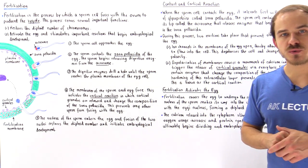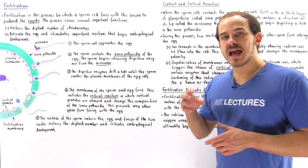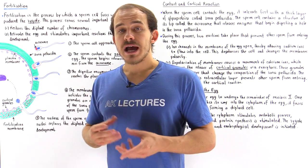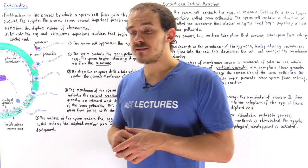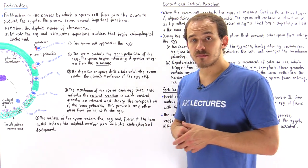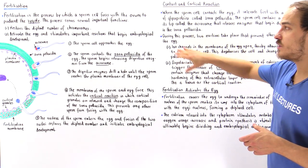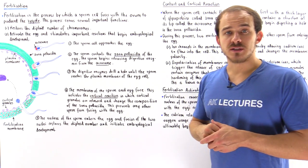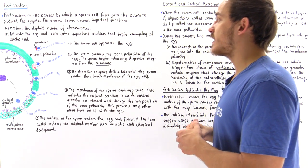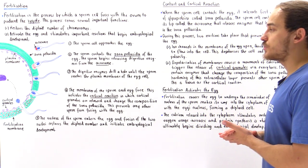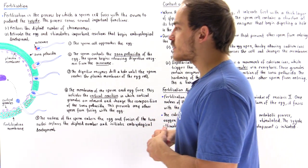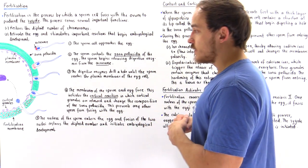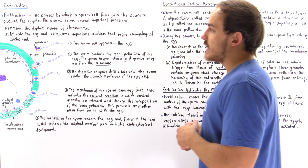What fertilization also does is it activates the egg — it transforms the egg into the zygote, and this begins several metabolic processes that eventually lead to and initiate embryological development, as we'll see in the next several lectures. Now let's discuss and focus on the process of fertilization and how it actually takes place.